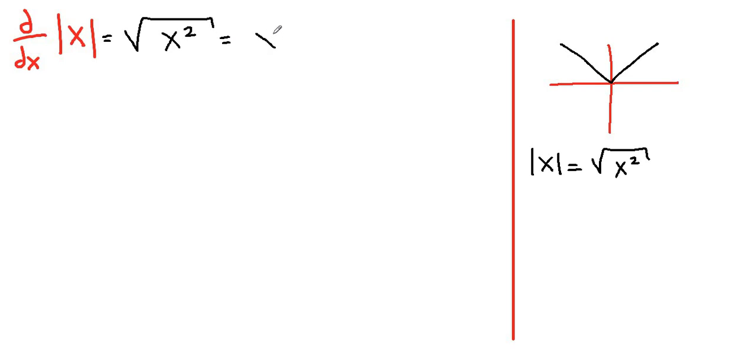So we can express it as x to the second raised to the 1 half and we can apply power rule and the chain rule. So we bring power to the front which is going to be 1 half x to the second.